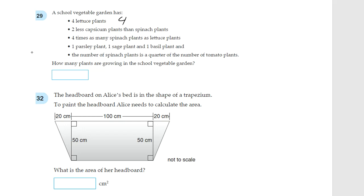Four times as many spinach plants as lettuce plants. So, four times four is 16. So, we have 16 spinach plants. Now, two less capsicum plants than spinach plants. So, two less than 16 is 14. One parsley plant, one sage plant, and one basil plant. Add them up. You'll get three. And, the number of spinach plants is a quarter of the number of tomato plants. So, this is equal to a quarter of the number of tomato plants. So, in other words, the number of tomato plants is four times the number of spinach plants. So, four times 16 is 64. That's that.